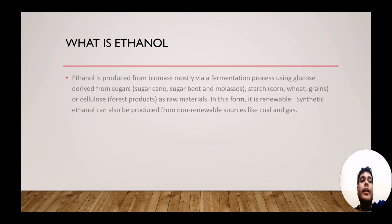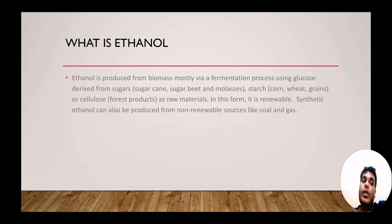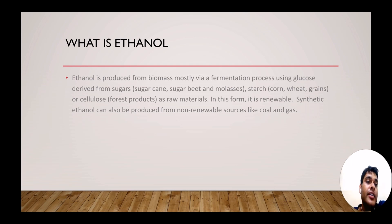The biggest difference is in the definition of Ethanol and Methanol. What is the definition of Ethanol? Ethanol is produced from biomass mostly via fermentation process using glucose from sugars, starch, cellulose as raw materials. In this form it is renewable. Methanol is prepared from natural gas, coal and biomass. But Ethanol is prepared via a fermentation process derived from sugarcane, sugar, wheat, molasses, then starch which consists of corn, wheat, grains and cellulose that are forest products. These are the raw materials.